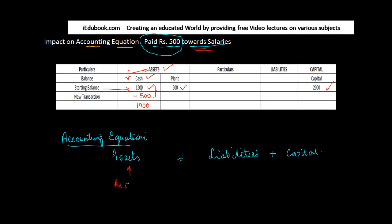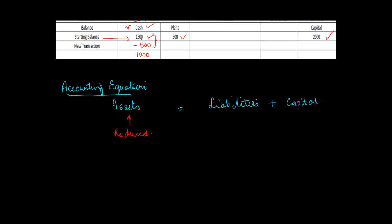On the asset side, cash is getting reduced. Now what is the second account which is getting impacted? I am making a payment on account of salaries. Salaries is basically an expenditure. Whenever you incur an expenditure, that is going to increase your loss. There will be incomes also, but currently we are not considering income.